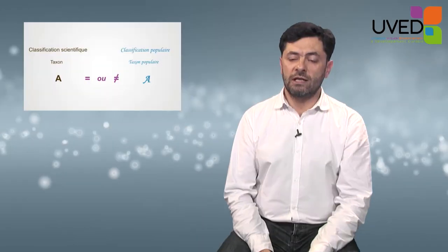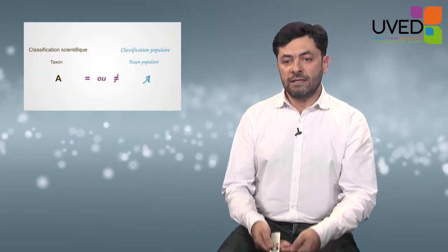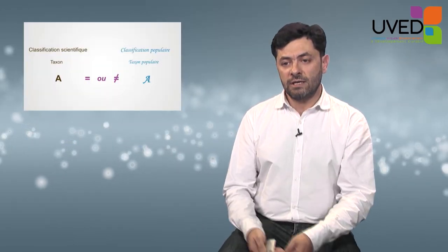These three operations are: identification, denomination, and insertion in the reference system with its categories. Let's come back to the comparison between scientific classification and popular classification.